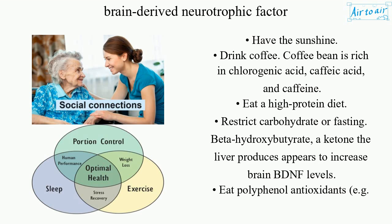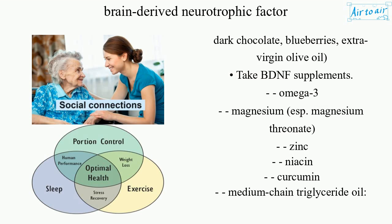Have sunshine. Drink coffee — the coffee bean is rich in chlorogenic acid, caffeic acid, and caffeine. Eat a high protein diet. Restrict carbohydrates or try fasting — beta-hydroxybutyrate, a ketone the liver produces, appears to increase brain BDNF levels. Eat polyphenol antioxidants, e.g. dark chocolate, blueberries, and extra virgin olive oil.